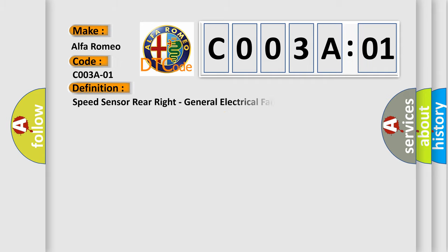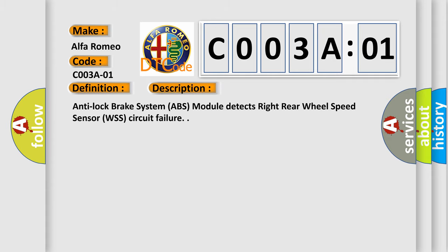The basic definition is: Speed sensor rear right, general electrical failure. And now this is a short description of this DTC code: Anti-lock brake system ABS module detects right rear wheel speed sensor WSS circuit failure.